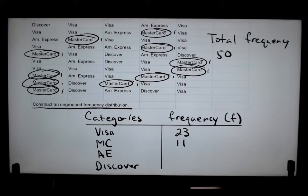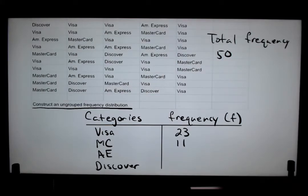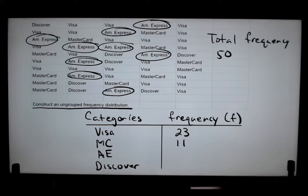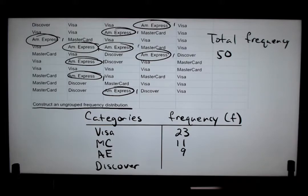Going back now, we're going to look at American Express. I'm going to circle all those that are American Express. Not very many in this case. Let me count: one, two, three, four, five, six, seven, eight, nine. So I have nine American Expresses — nine customers used American Express.